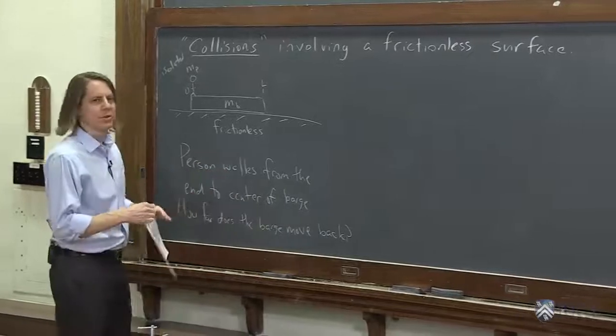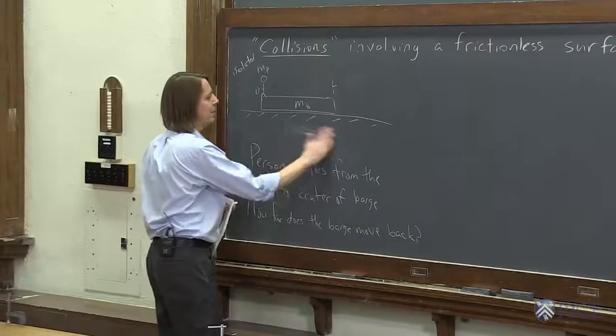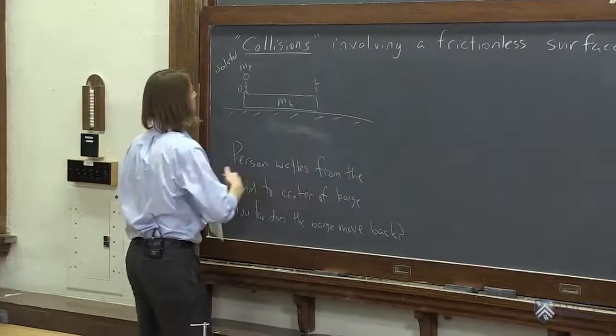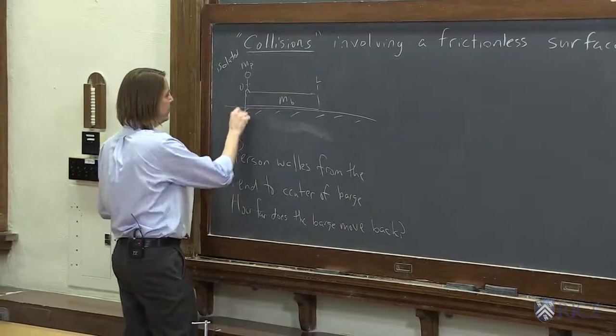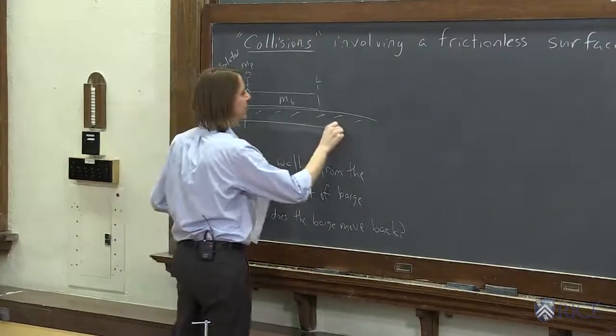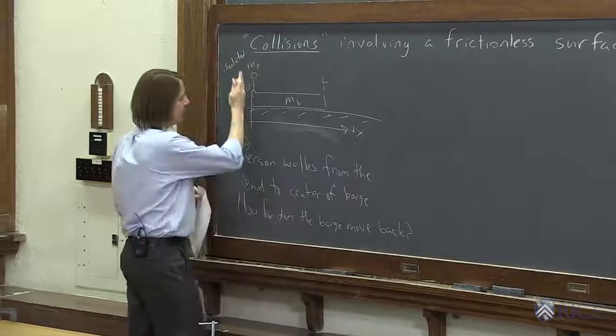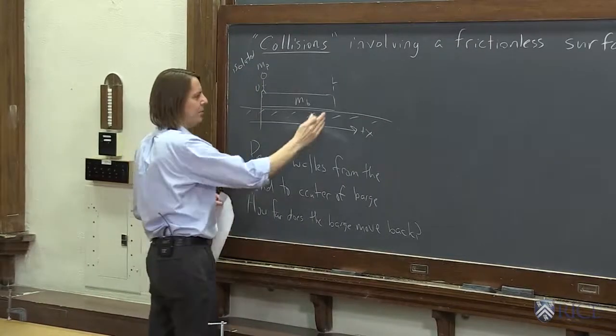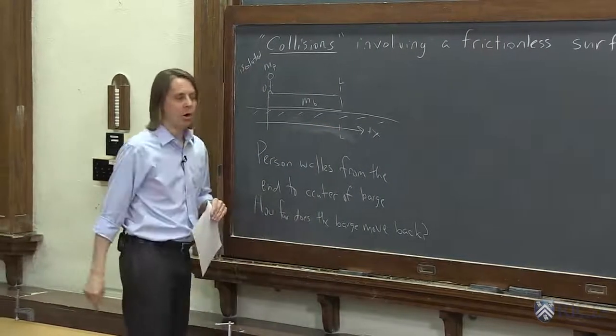So to do that, we would hope to have an initial and a final state. So allow me to erase my frictionless word here, because we can use this as our initial position of everything. So on the x-axis, I was at the origin. The edge of the barge is at the origin. The barge is L long.